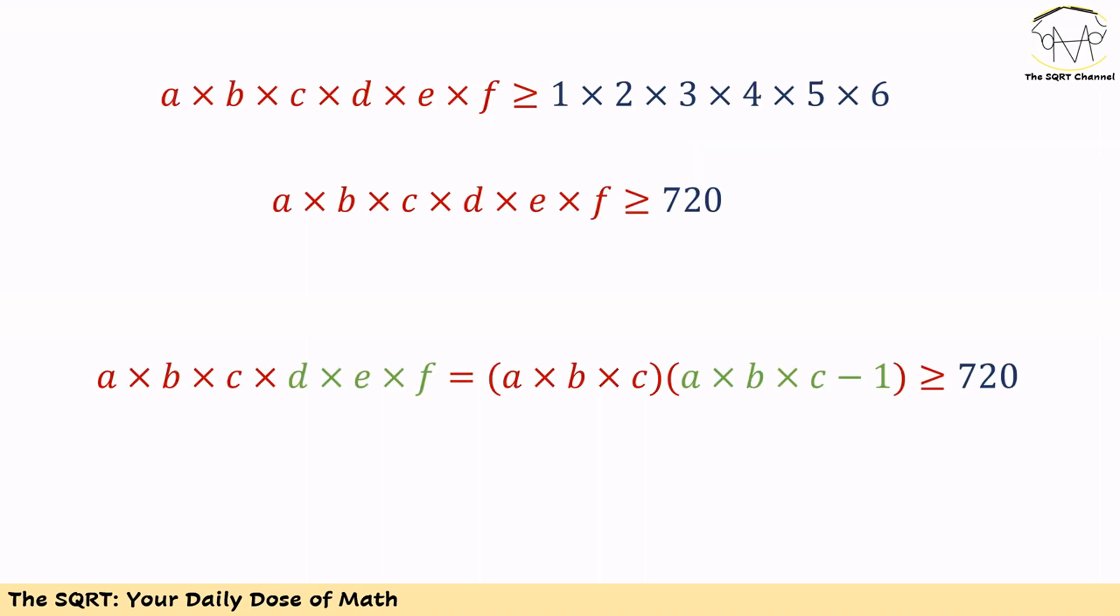Now let's focus on the product of A to F. We know this product is greater than the product of 1 to 6. The reason is A, B up to F are distinct integers. We pick the minimum possible value between 1 to 9 for A, the next possible value for B, and so on and so forth.